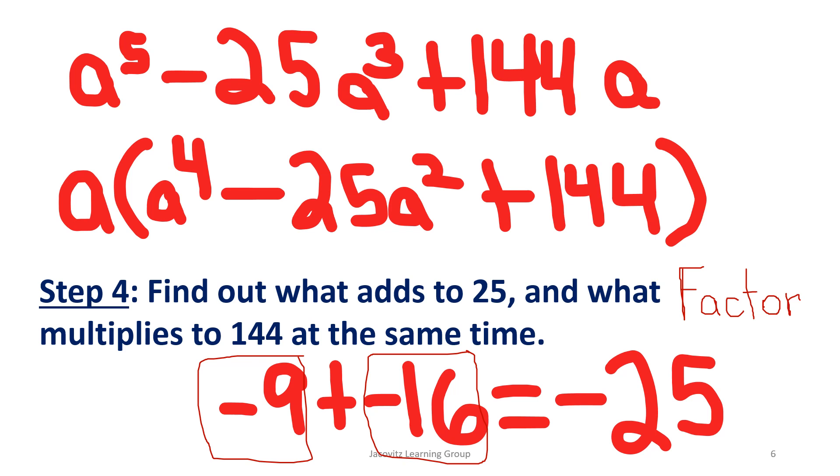Here's the other thing. Negative 9 times negative 16 is going to give you a positive 25. I'm sorry, equals a positive 144, not 25. It's going to be a positive 144. So these are your terms.